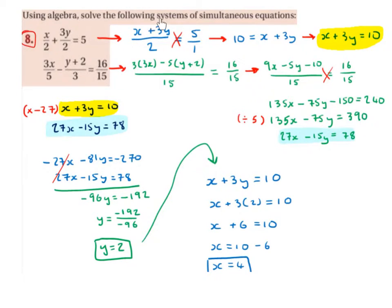Using algebra, solve the following systems of simultaneous equations. x over 2 plus 3y over 2 equals 5, and 3x over 5 minus y plus 2 over 3 equals 16 over 15.